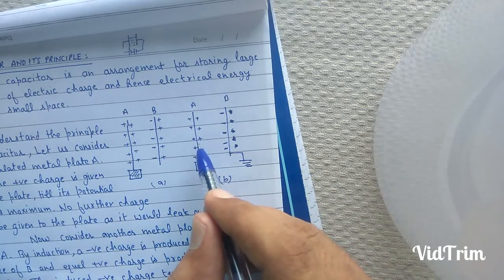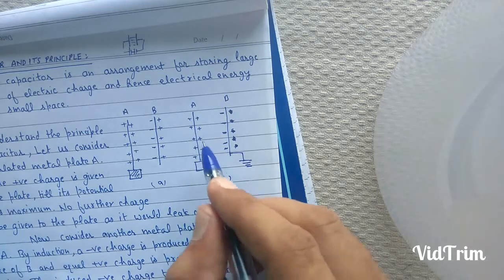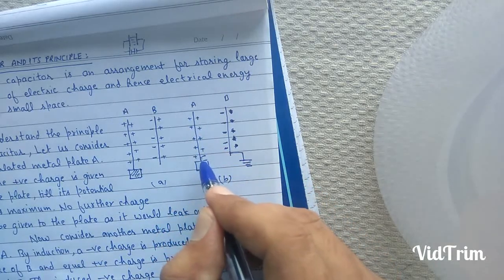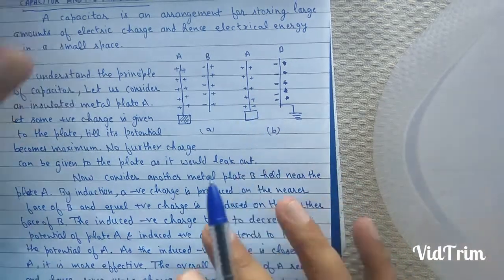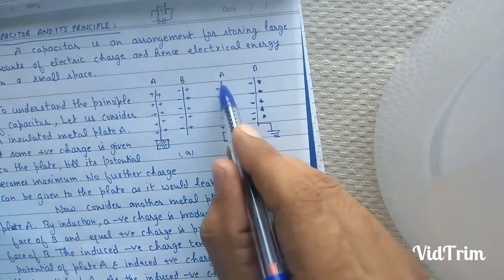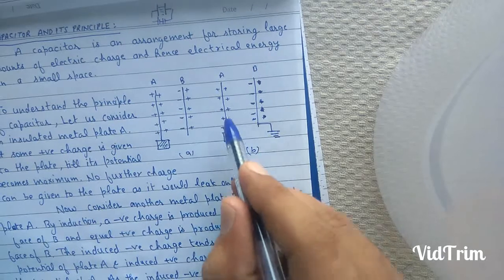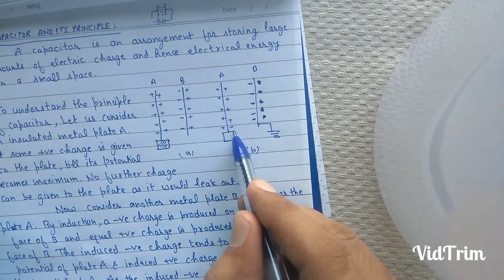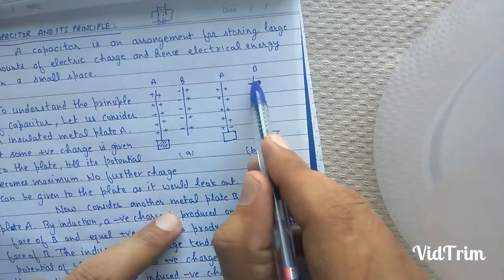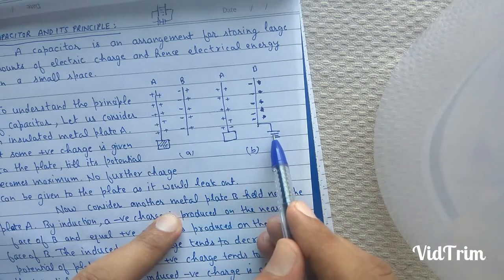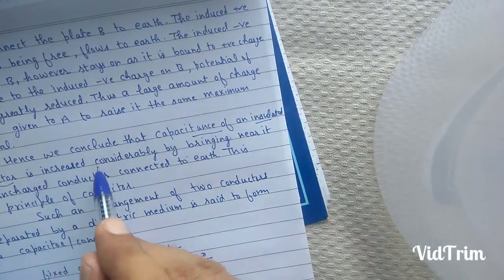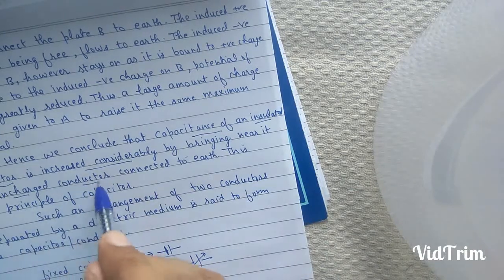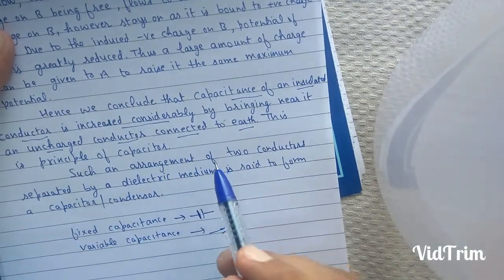A large amount of charge can now be given to plate A to raise its potential to the same maximum value. Therefore, we see that the capacitance of an insulated conductor is increased by a large amount when we bring near it an uncharged earth-connected conductor. This is the principle of a capacitor.